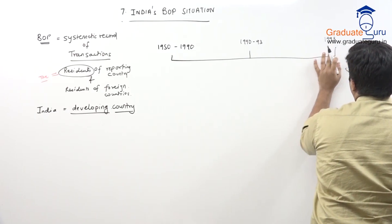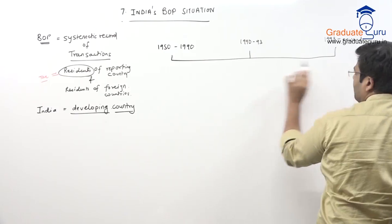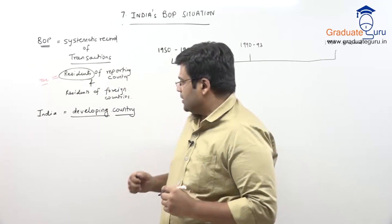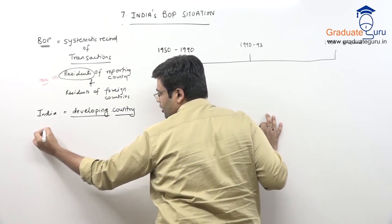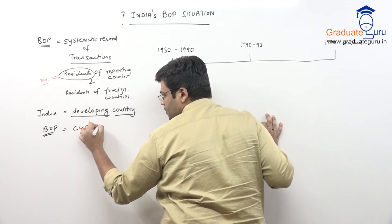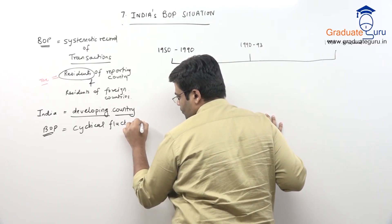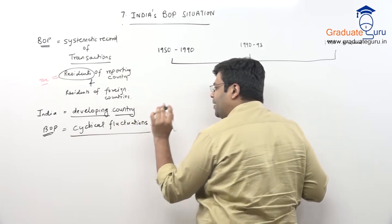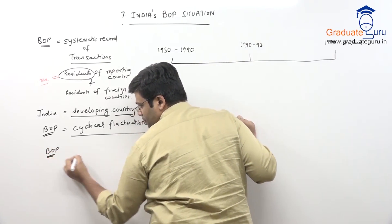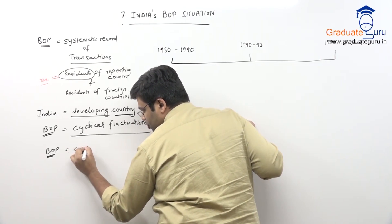Subsequently, we can divide these into further phases as well, but these are the most important phases in India's BOP timeline. India's balance of payments will always have cyclical fluctuations. Typically, as a feature of any developing country, our BOP has gone through crucial situations for a considerable amount of time.